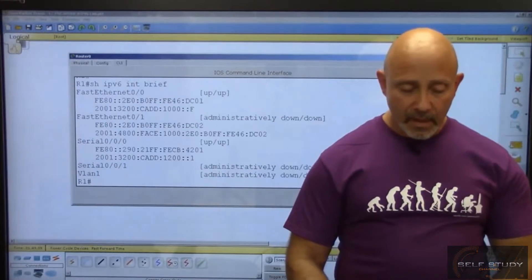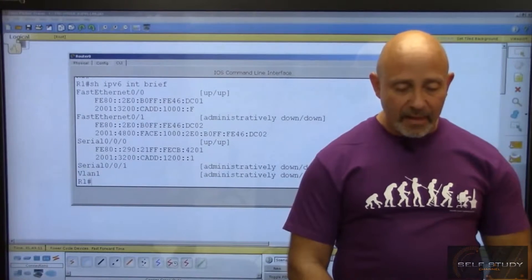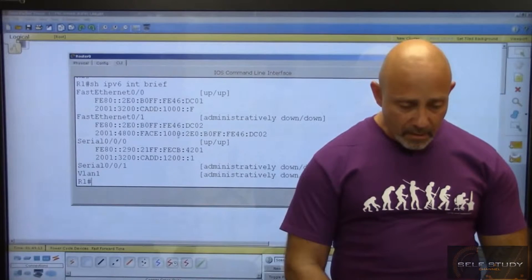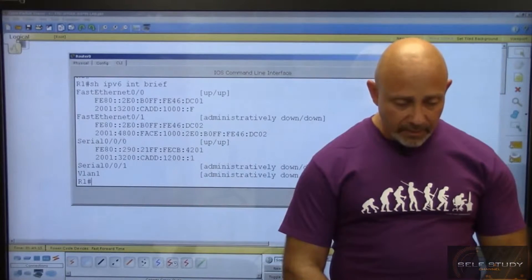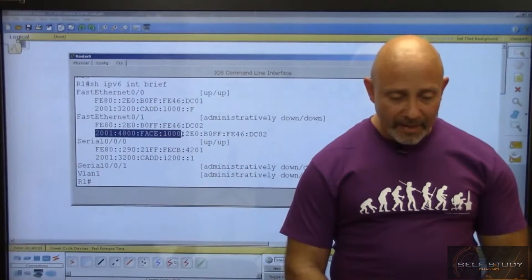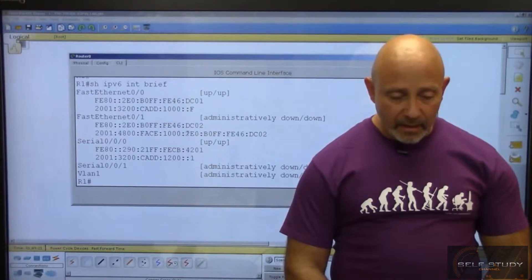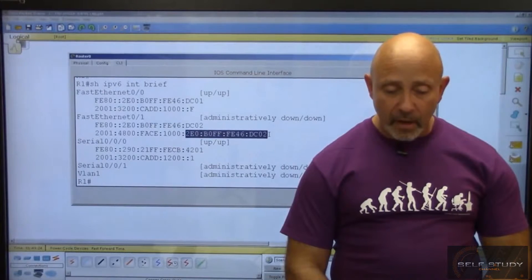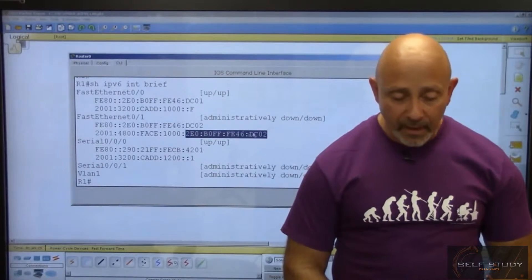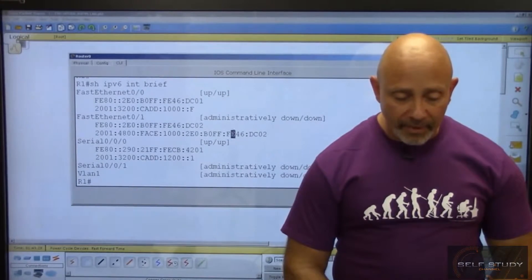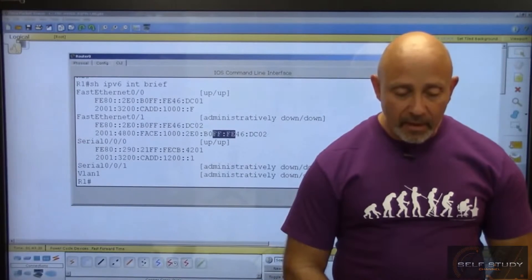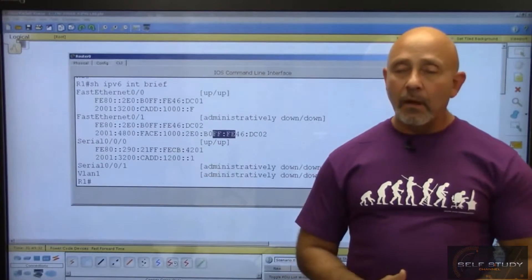I'm going to show IPv6 int brief. You can see that in my Fast Ethernet, here's my FACE 1000, there's my network ID, and here is the interface portion which I didn't put, it automatically did it for me. There is the FFFE that I was telling you about that it put smack in the middle of the MAC address.